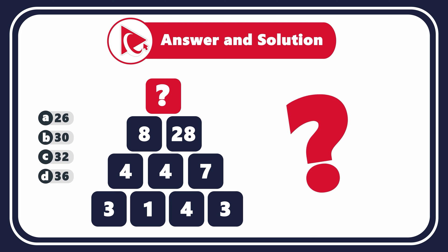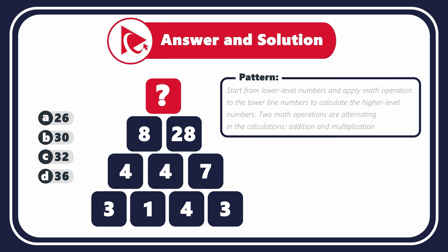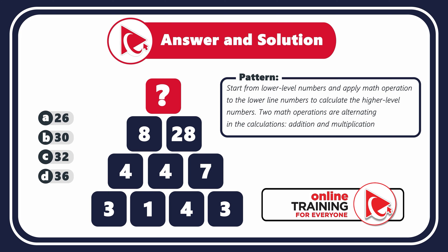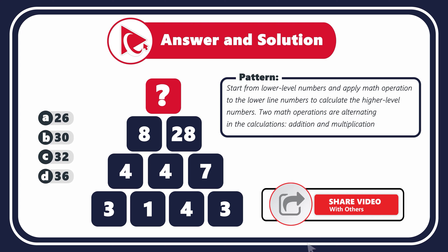Remember how I presented the information to you? I started from the top and went to the bottom. But in fact, you need to start from the low-level numbers and apply math operations to the low-line numbers to calculate the higher-level numbers. To confuse you even more, there are two math operations that are alternating in the calculations: addition and multiplication.